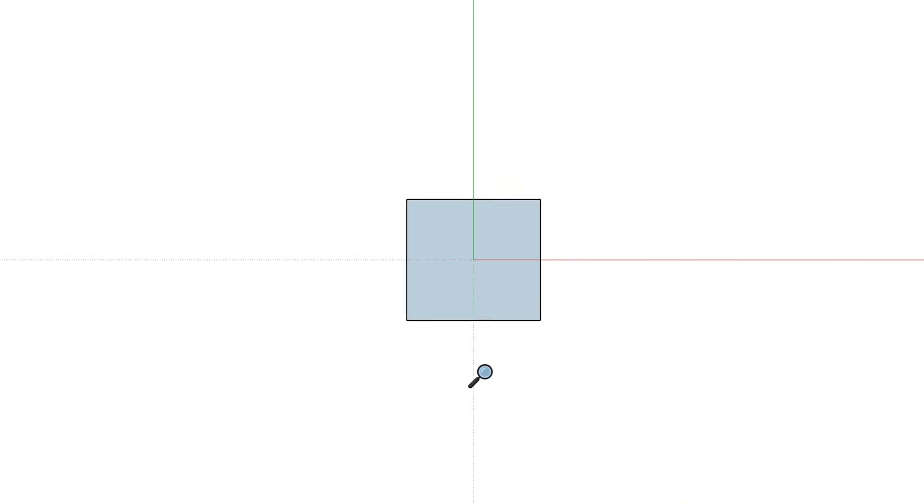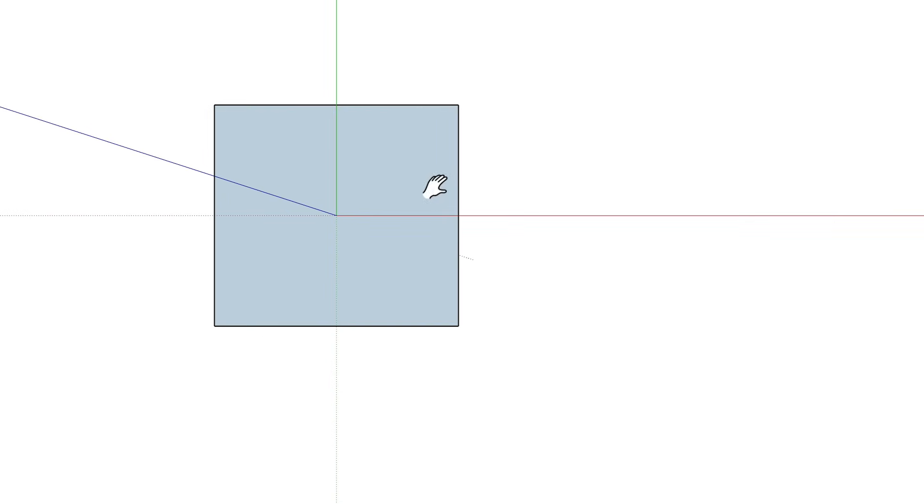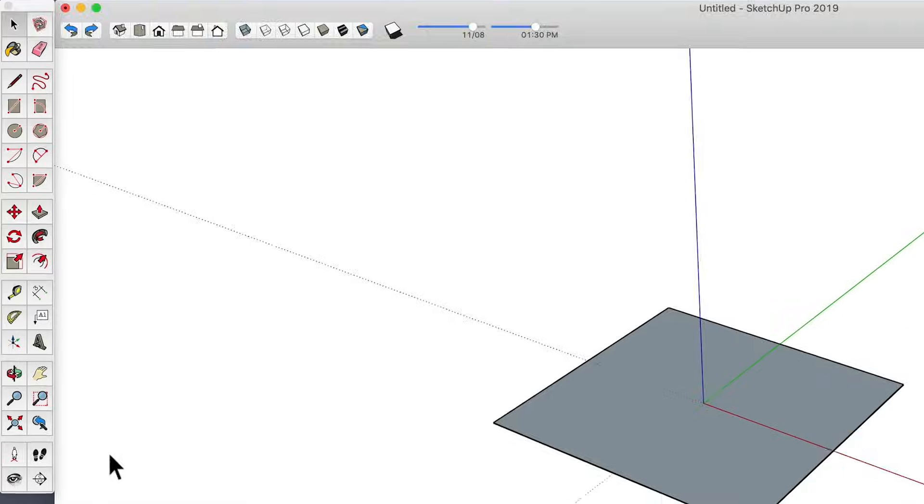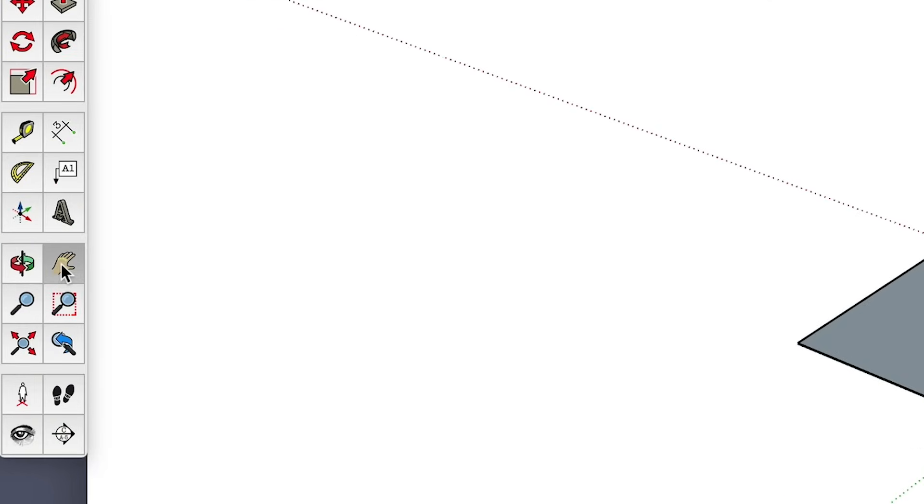While in your 2D template, you can zoom, pan, and orbit your virtual camera in 3D space to get different views of your model. And while there are tools on your toolbar for zoom, pan, and orbit, you should never pick them.